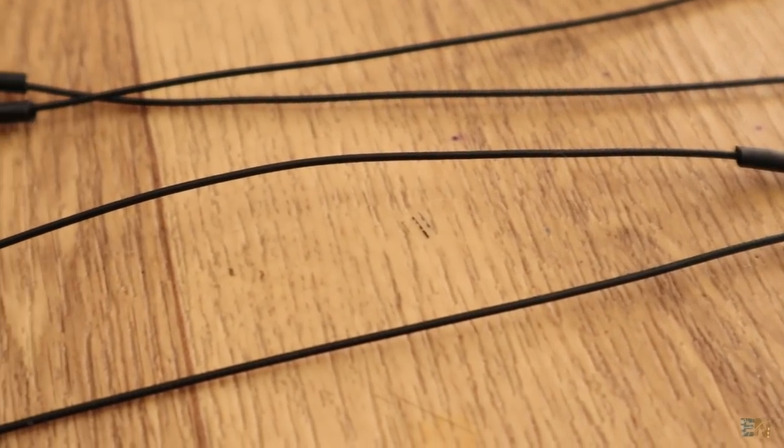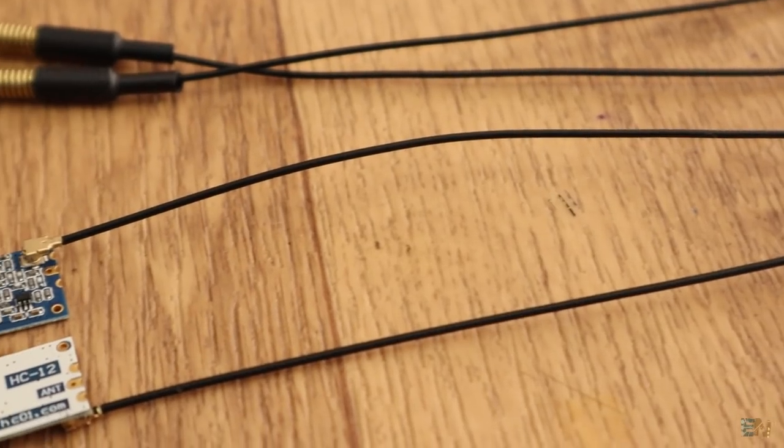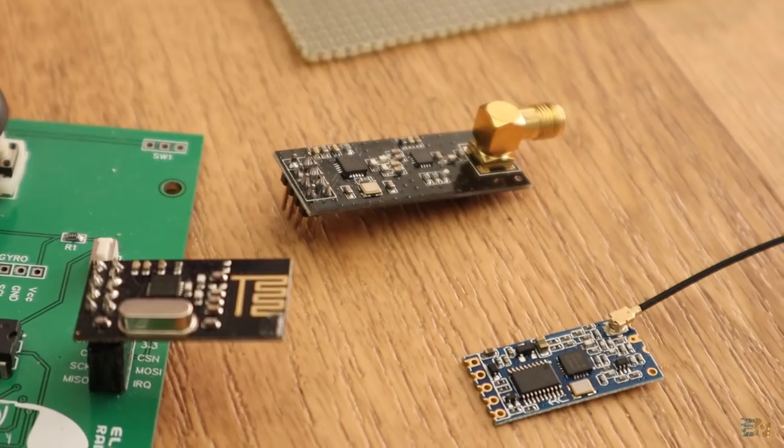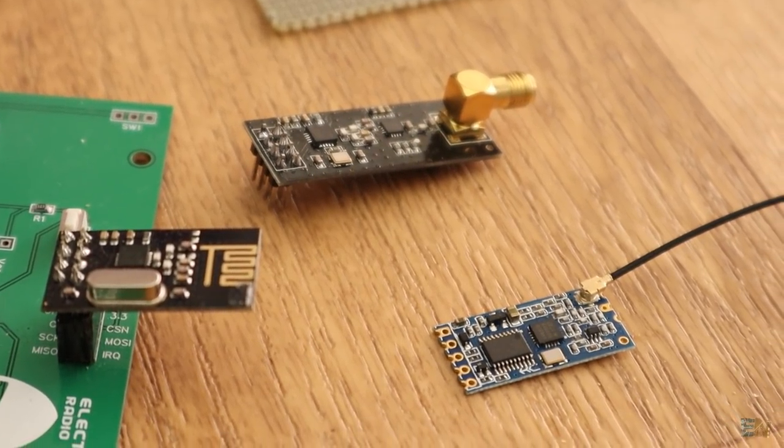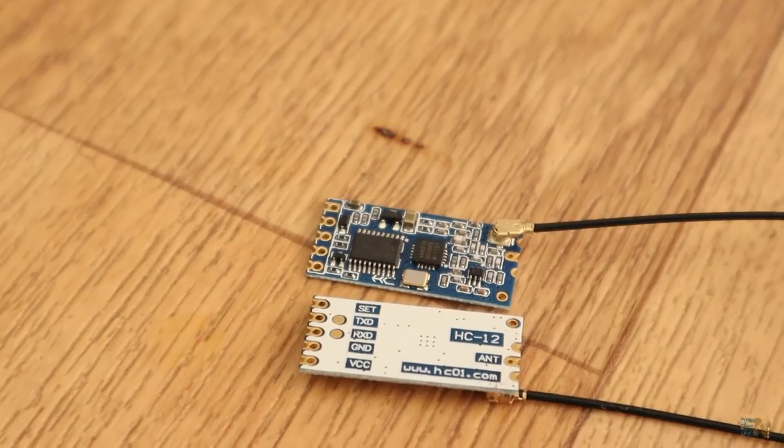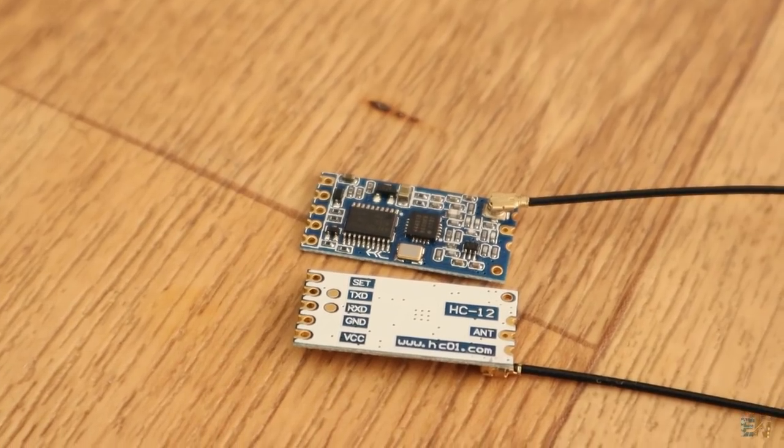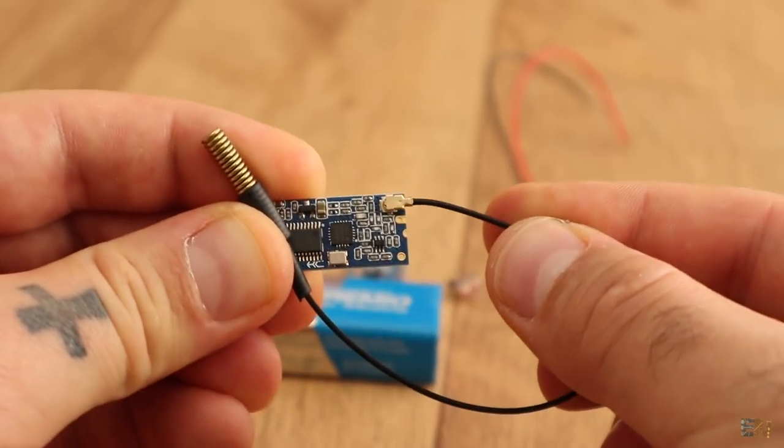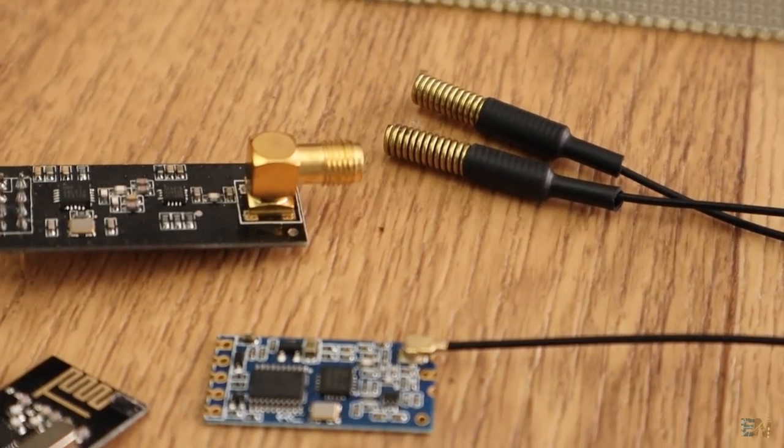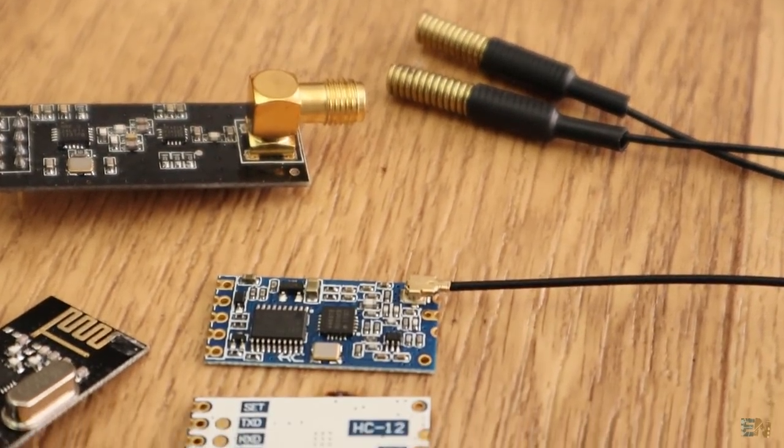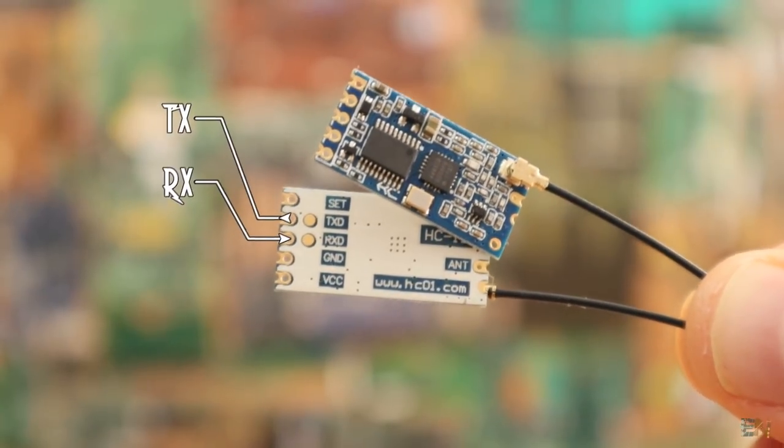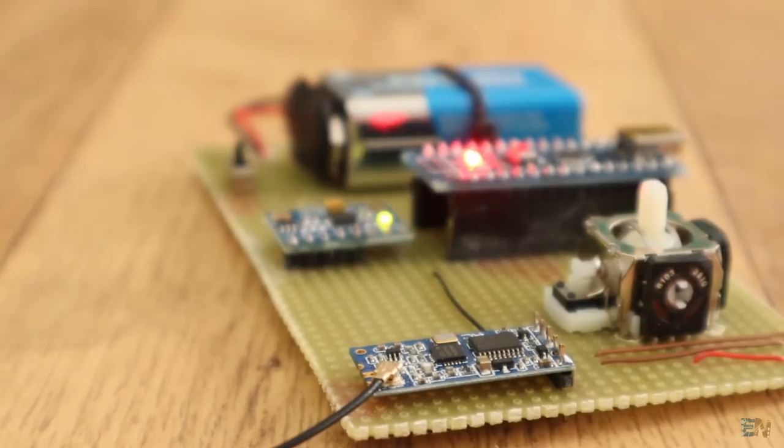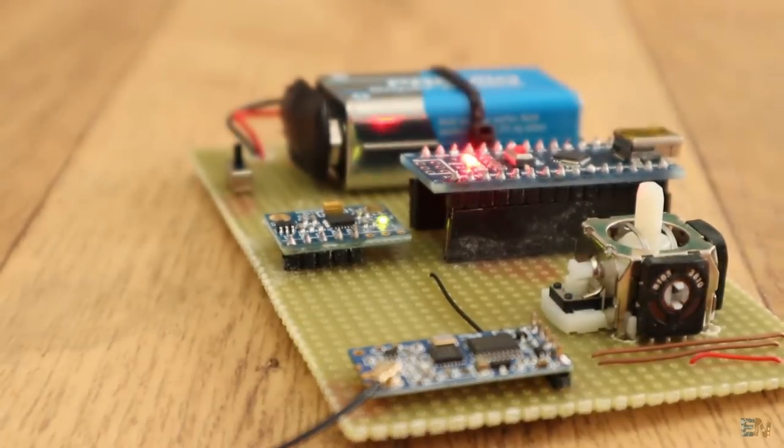In this project I will use the HC12 radio module because we already seen a lot of videos with the NRF24 module on this channel and I would like to show you how the HC12 works as well. Also it seems to have a longer range than the NRF24 module and I've also ordered these antennas for the modules and with that we will see the range difference. This module is very easy to use. It has the TX and RX pins and using the software serial communication we could send and receive data very easy.